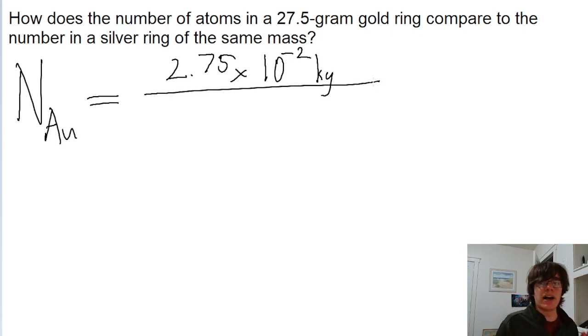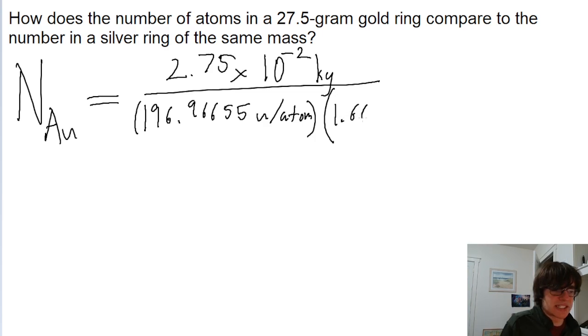We divide by the mass of a single gold atom. According to the periodic table, one gold atom has a mass of 196.96655 atomic mass units per atom. To get this to work out in our calculations, we need to convert from atomic mass units into kilograms. So we multiply this by 1.66 times 10 to the power of negative 27 kilograms per atomic mass unit.